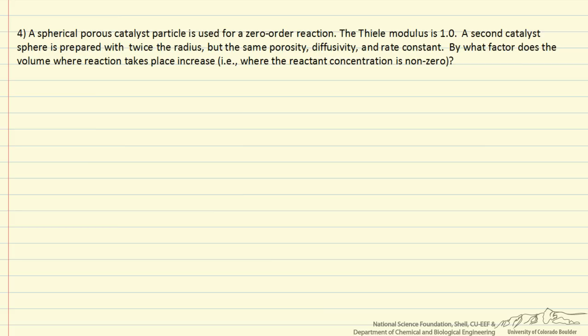So when we have an effectiveness factor, for example 0.5, it means half the catalyst has the reactant concentration non-zero, and the other half the concentration is zero. The half that has the concentration non-zero, the rate is identical to the external surface rate.